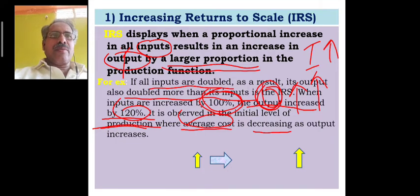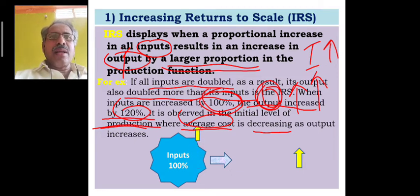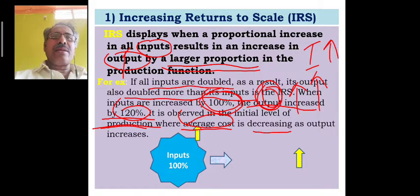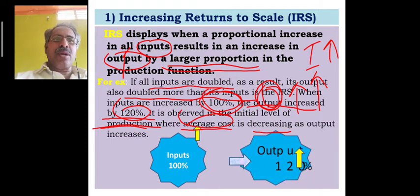We can understand this with a graphic. Inputs are increased by 100%, which leads to output also increasing. In the next diagram, that output increases by 120%, as shown by the arrow mark.